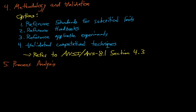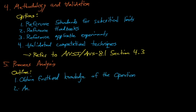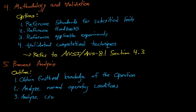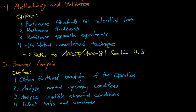When performing the process analysis, the standard recommends that criticality safety analysts should follow four steps. First, obtain first-hand knowledge of the operations and systems being evaluated. Second, understand and analyze the range of normal operating conditions and demonstrate that the process remains subcritical under all of them. Third, identify, analyze, and document all credible abnormal conditions and show that the operation will remain subcritical under all of these conditions. And lastly, select the limits and controls for the operation.